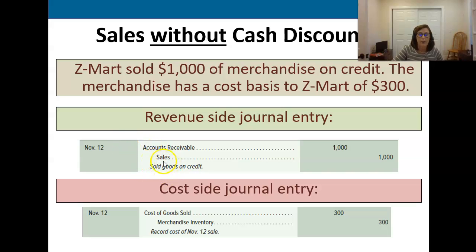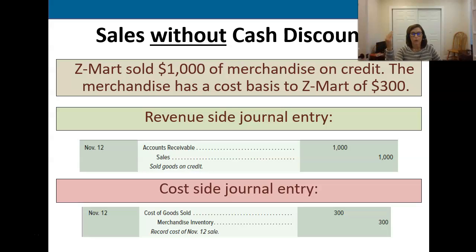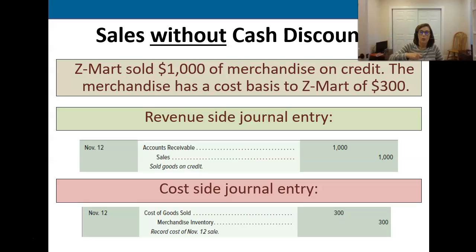We've got accounts receivable debited, and this sale was for a thousand dollars. Now we paid three hundred dollars for the item that we turned around and sold for a thousand dollars. So we need to account for that three hundred dollars — it will show up in the cost of goods sold section on our income statement, and we also want to reduce our inventory count by that amount. So we record cost of goods sold of three hundred dollars and credit merchandise inventory to reduce the merchandise inventory balance by the three hundred dollars of the items that we sold.